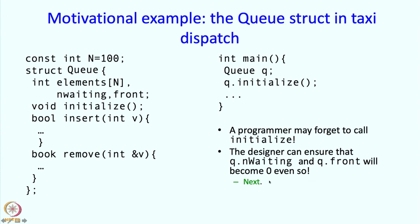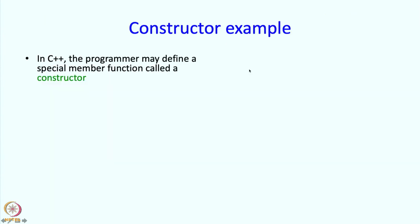How does that happen? We are going to see in a minute. But the idea is that somehow when we create the queue, we will execute something automatically which will cause n_waiting and front to become zero. This special code that we execute at the time of the construction of an object is called the constructor code.